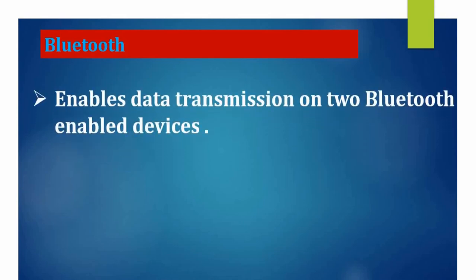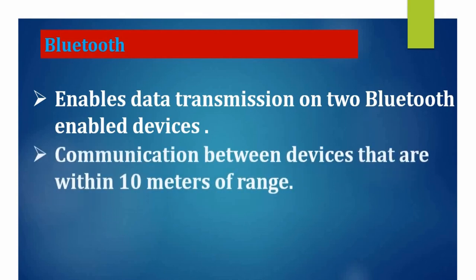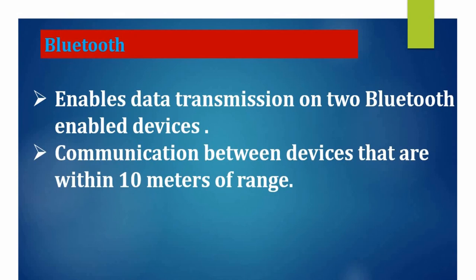Bluetooth is something we use in our everyday life. It transmits data between two Bluetooth-enabled devices — for example, from a Bluetooth-enabled computer to a Bluetooth-enabled mobile device. Similar to radio transmission, the drawback of Bluetooth is that it can only communicate and transmit data within a range of 10 meters.